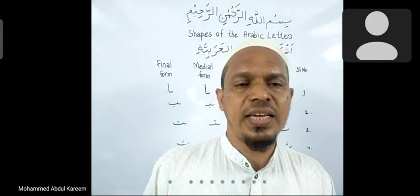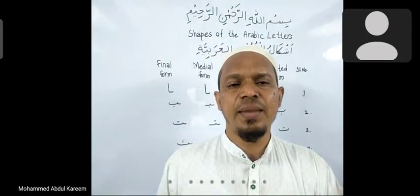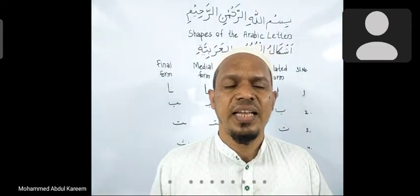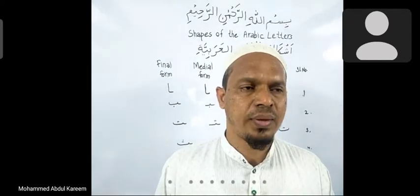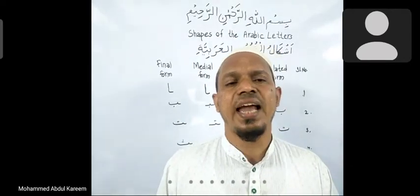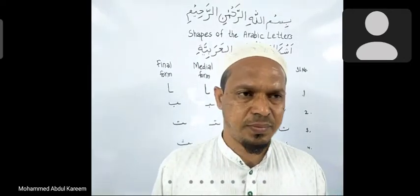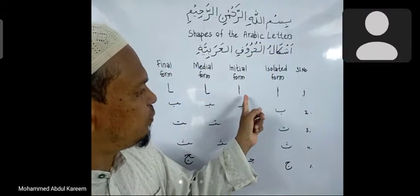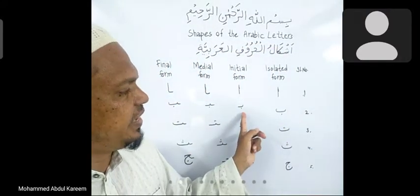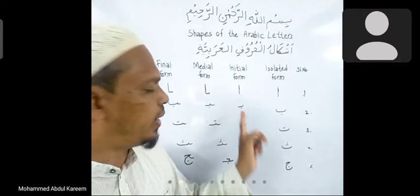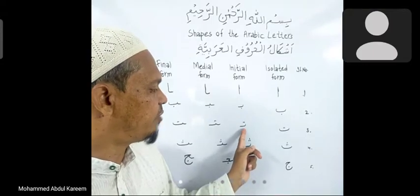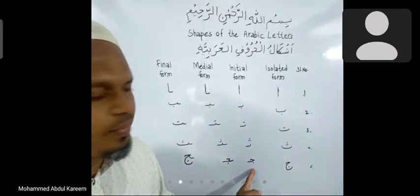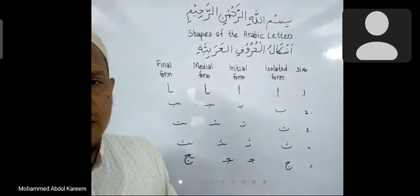Initial form means the letters appear in the beginning of the word. They are written in half form and they can be joined to the following letters. This is the initial form of alif, this is the initial form of ba, initial form of ta, initial form of sa, and initial form of jim, and so on.